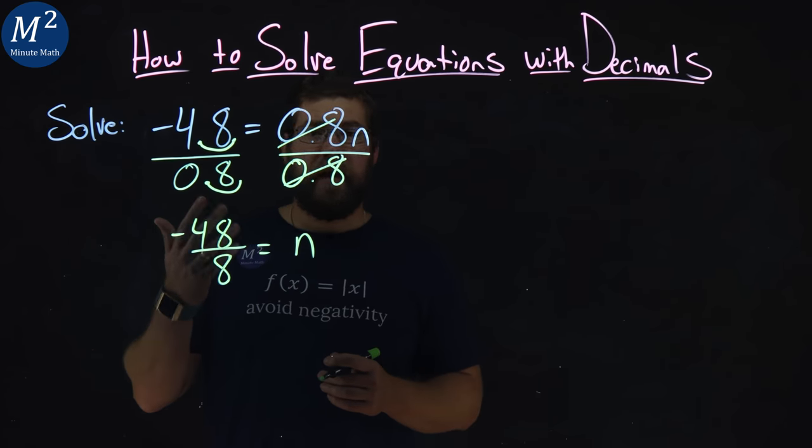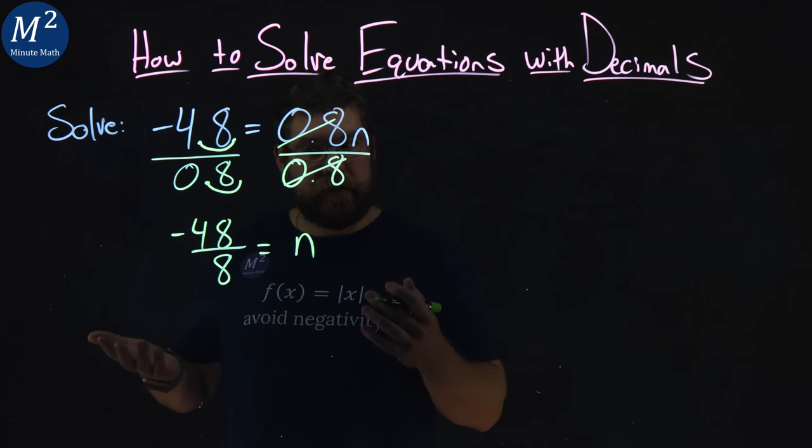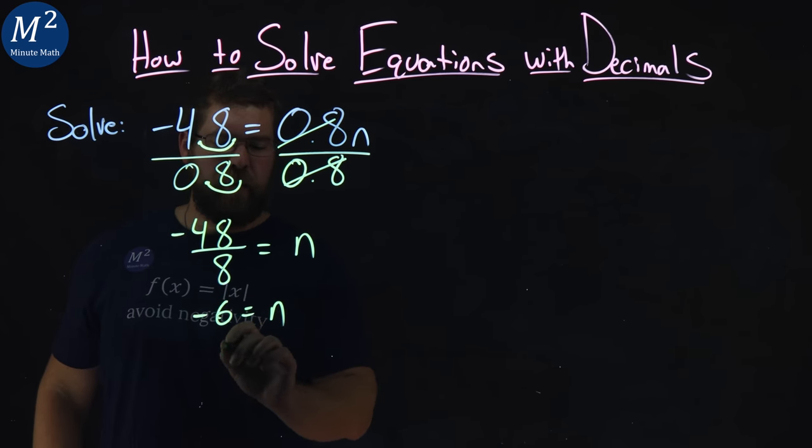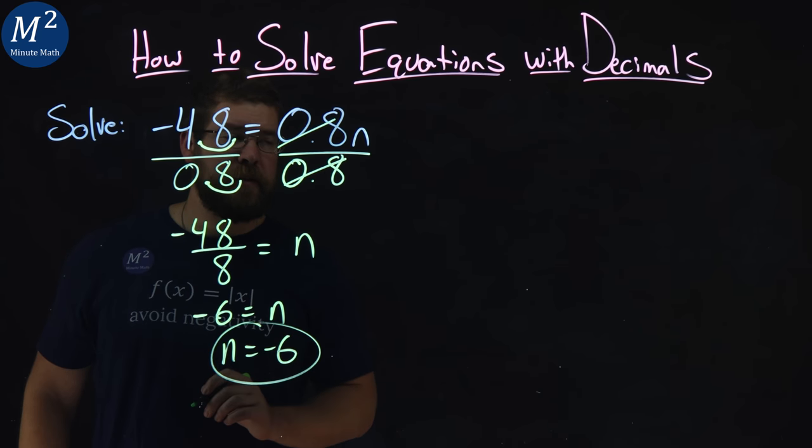Now, negative 48 divided by 8 is just negative 6, right? 48 divided by 8 is 6. So, negative 6 equals n, or n equals negative 6 here.